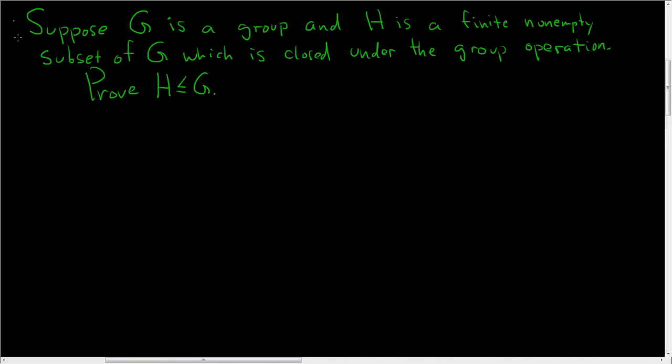Okay, we have a group G, and H is a finite, non-empty subset which is closed under the group operation. And we have to prove that H is a subgroup of G. So proof. I won't bother writing down the hypothesis, it's just so much to write. So suppose it's a group, and suppose H is a finite, non-empty subset which is closed under the group operation.